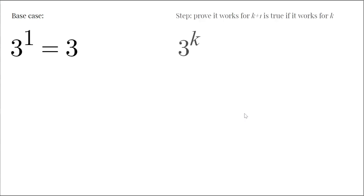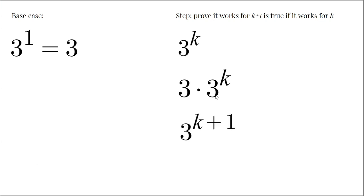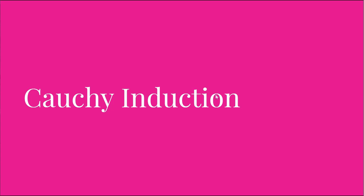Now we'll prove that if it's true for k, it's true for k + 1. We can assume that 3 to the k is odd. And then since odd times odd is odd, 3 times 3 to the k is also odd, which is the same as 3 to the k + 1. So 3 to the k + 1 is odd as well. Since we proved both parts of the induction, we've proved it. If this didn't make sense, you should rewatch this section because you'll need a solid understanding of induction to get the next part, which is Cauchy induction.